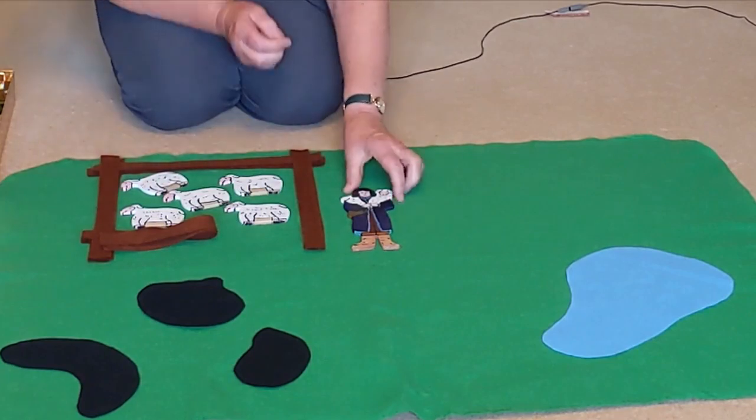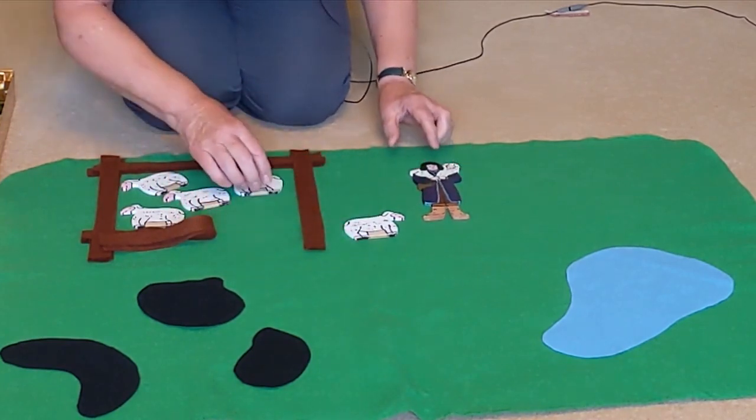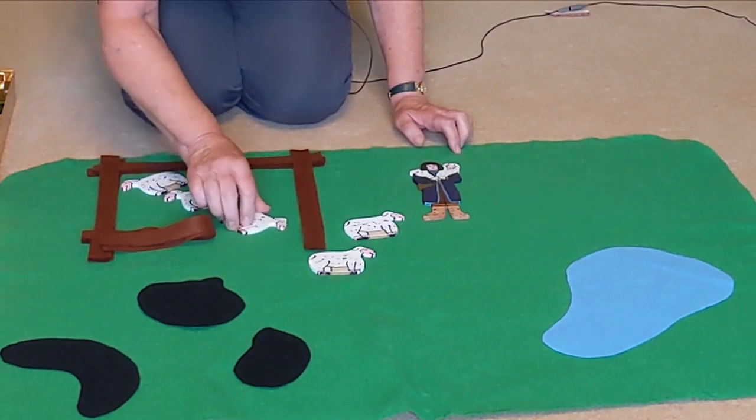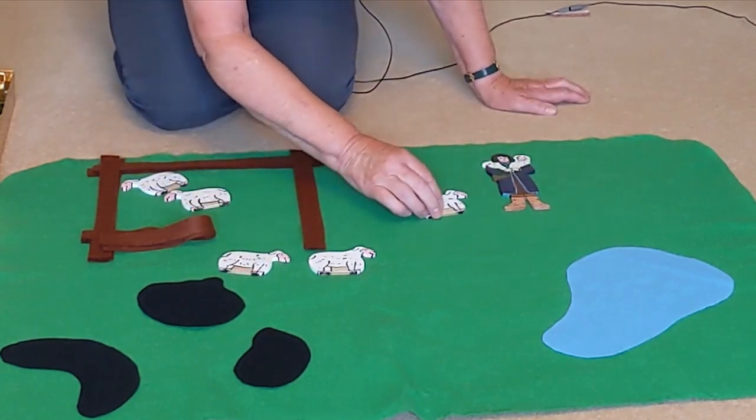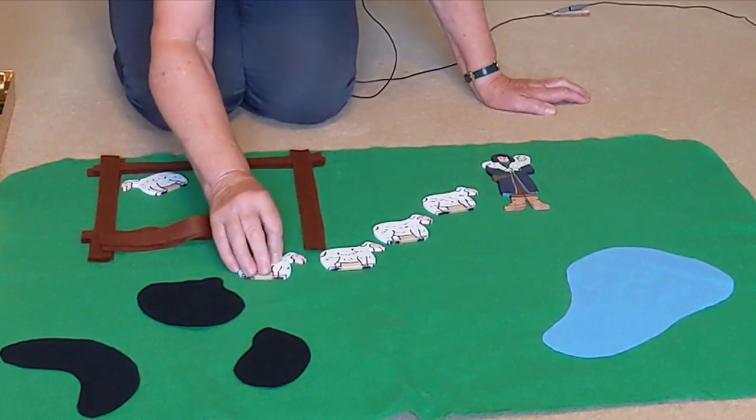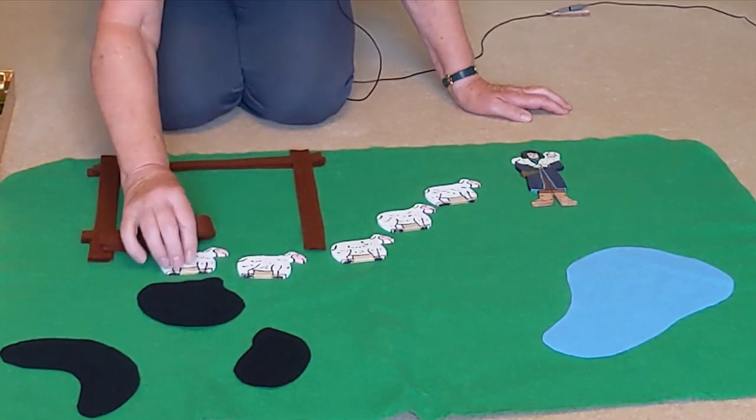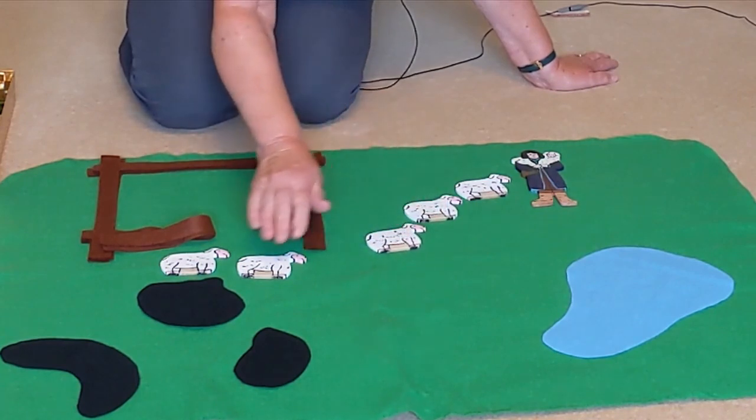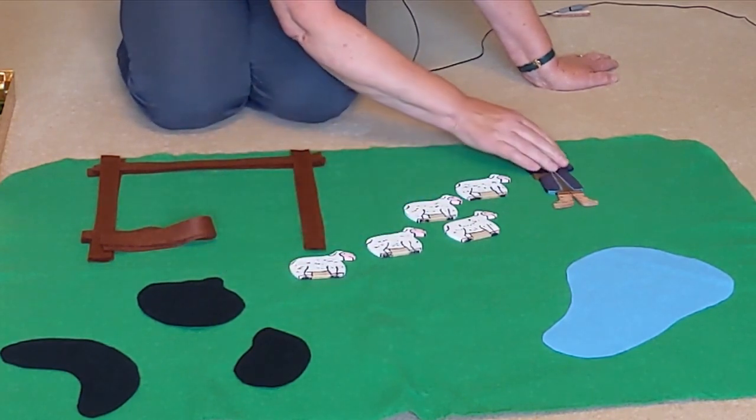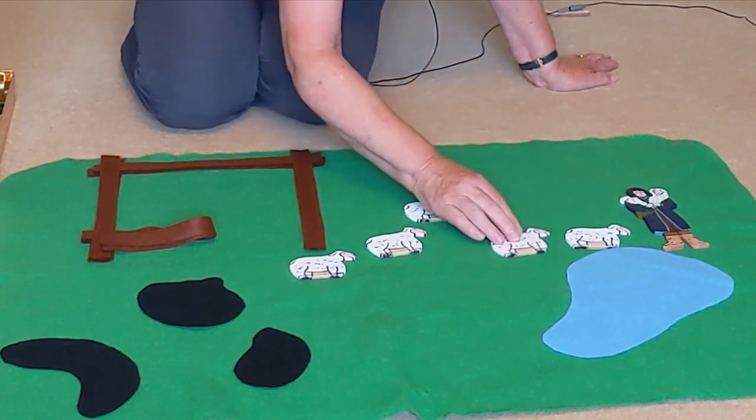And I know each of my sheep by name. And when I take the sheep from the sheep fold, they follow me and I show them the way. I show them the way to the good, green grass. And I show them the way to the cool, clear, fresh water.